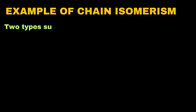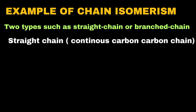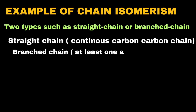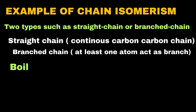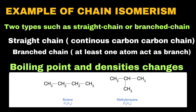Alkanes can exist as straight-chain or branched-chain isomers. Straight-chain isomers have all carbon atoms connected in a continuous line without any branches, while branched-chain isomers have at least one carbon atom attached to the main chain as a side group. For example, butane has two isomers. In its straight-chain structure, all four carbons are connected in a line, giving a higher boiling point due to stronger intermolecular forces.